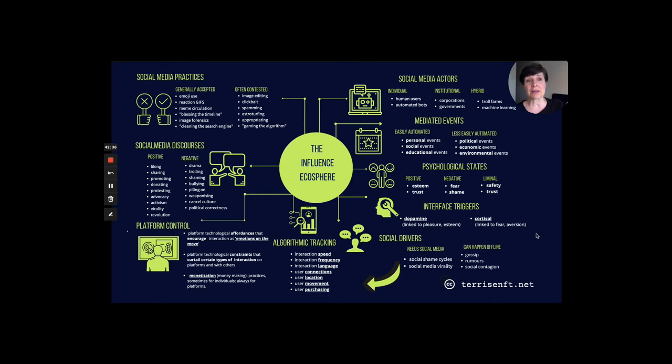At the platform level, certain kinds of interactions are dampened and certain kinds of information interactions are amplified in order to keep people online. Some of this is tied to flows like monetization. From here, we move to social media discourses about these processes that seem social but actually are techno-social. You'll see positive things like promoting, donating, and protesting, and negative ones like drama, trolling, and bullying.